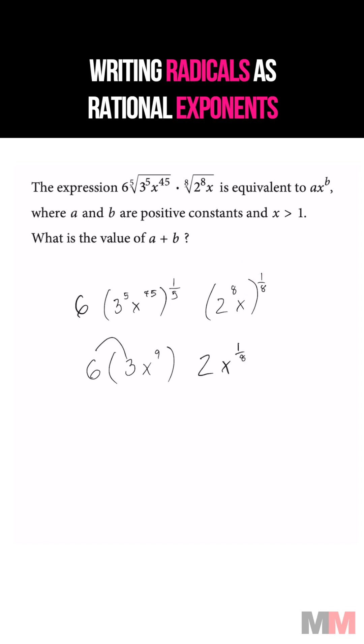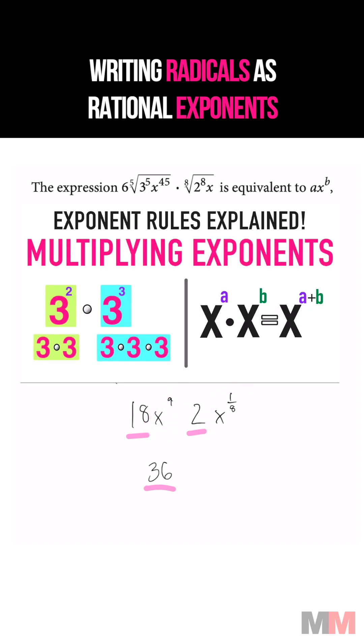Simplifying further by multiplying that, we'll get this. And from here, multiply the coefficients, 36, and multiplying powers with the same base, we just add the exponents.